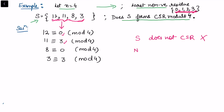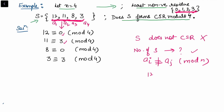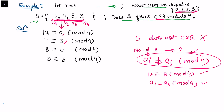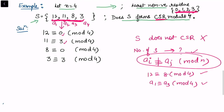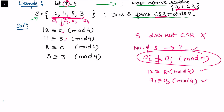One necessary condition is that the number of elements in the set must equal n, the number of possible remainders — here we have four elements and four possible remainders, so that condition is satisfied. However, the second condition is that none of the elements a1, a2, ..., an should be congruent to each other modulo n. In our example this fails because 12 ≡ 8 modulo 4, meaning a1 ≡ a3 mod 4. For a complete system of residues, no two elements may be congruent to each other, and the count must equal n.